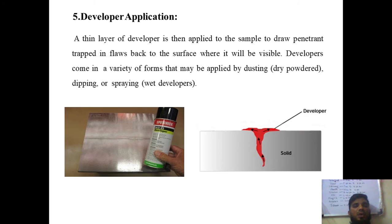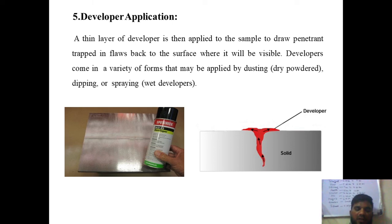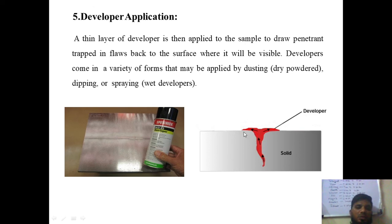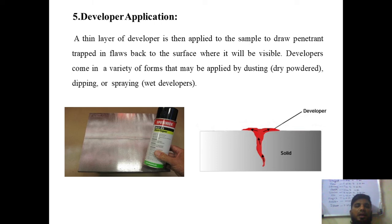After removing excess penetrant, a thin layer of developer is applied to draw the penetrant trapped inside cracks back to the surface. Because of the contrast color between the developer and the penetrant, the trapped penetrant comes out and creates a visible layer. Based on that visible layer, you can observe that there is a crack at the surface.